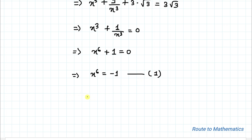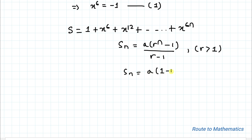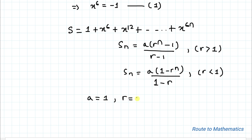We are asked to find 1 plus x to the power 6 plus x to the power 12, and the series goes up to x to the power 6N. Let's call the given series S. We can see this is a geometric progression series. The GP formula is: S_N equals A multiplied with R to the power N minus 1, divided by R minus 1 when R is greater than 1; and S_N equals A multiplied with 1 minus R to the power N, divided by 1 minus R when R is less than 1. Here A equals 1, R equals x to the power 6, and the number of terms N equals N plus 1.